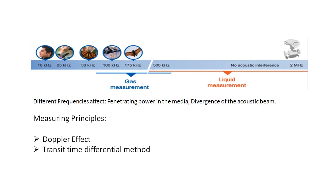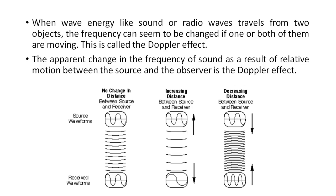The measuring principles are the Doppler effect type ultrasonic flow meter and the transit time differential method ultrasonic flow meter. In this video I will discuss only the Doppler effect type of ultrasonic flow meter. In the next video I will discuss the transit time type flow meter.